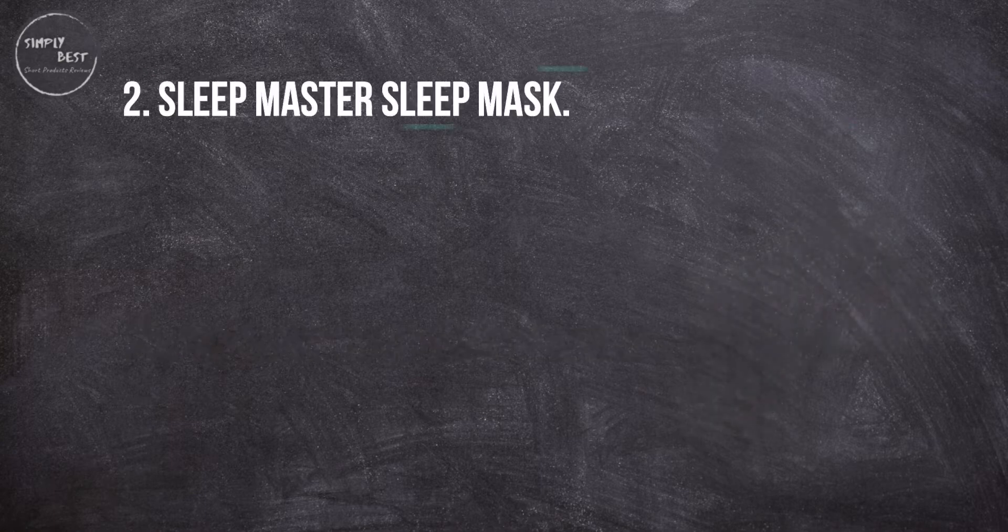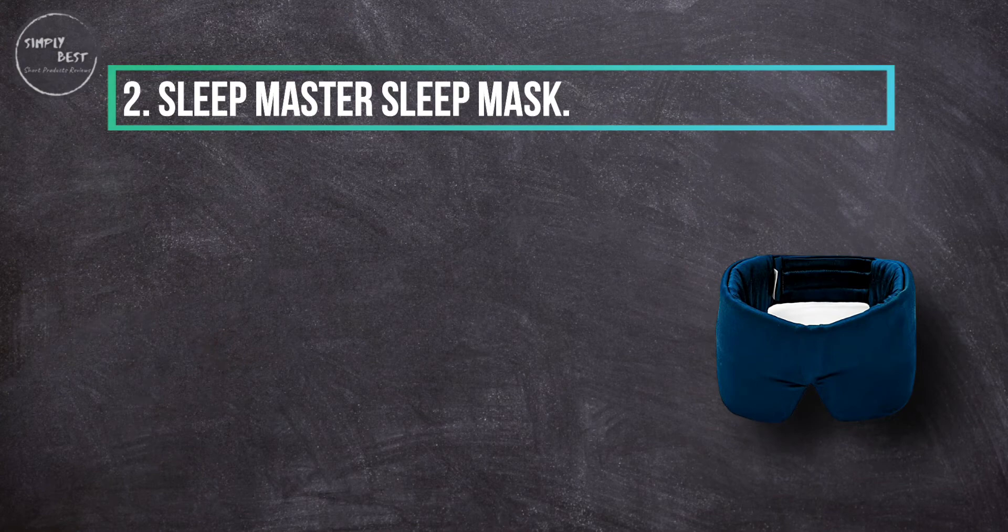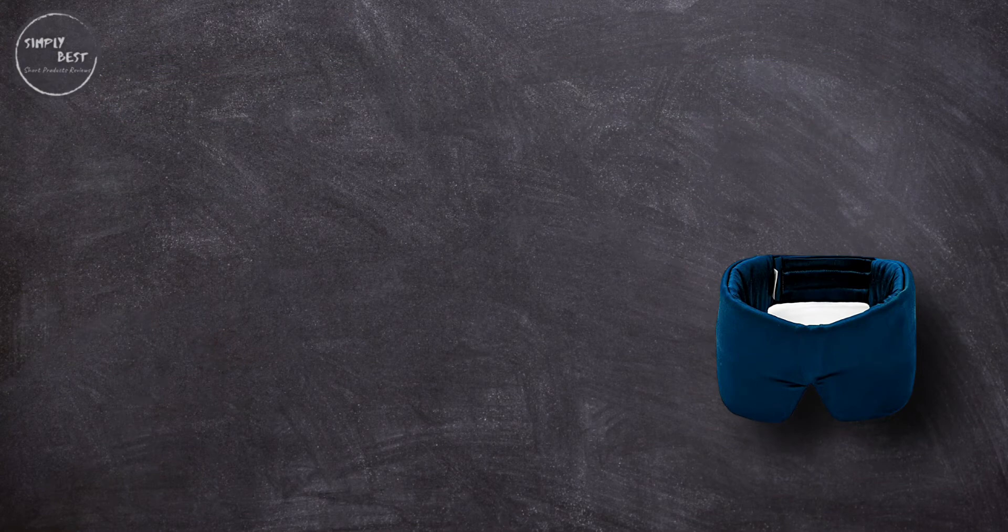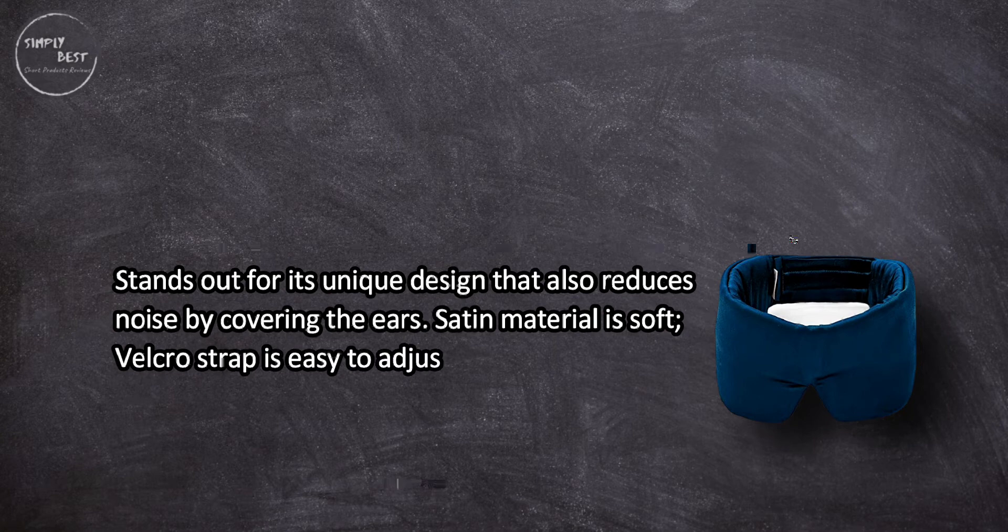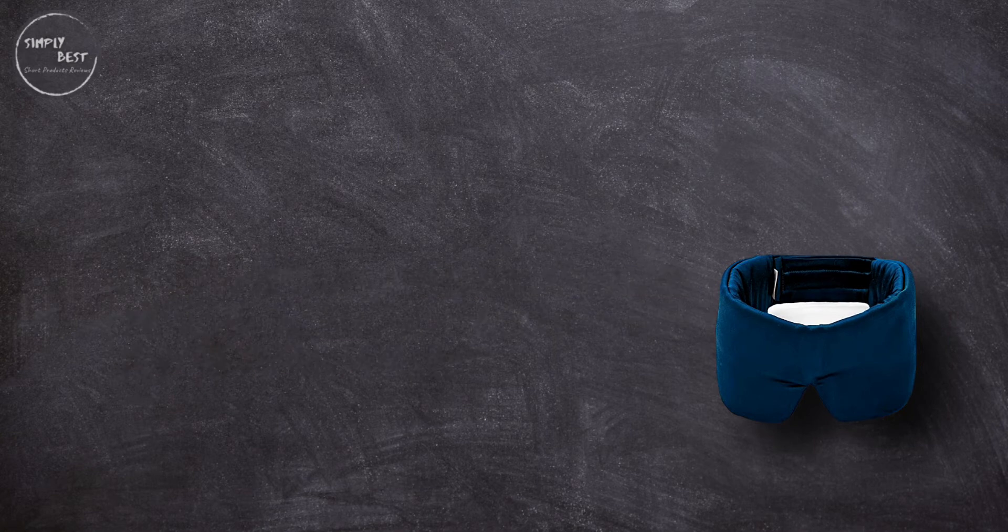At number two: Sleep Master Sleep Mask. Stands out for its unique design that also reduces noise by covering the ears. Satin material is soft and velcro strap is easy to adjust. A unique sleep mask that also functions as a noise reducer, but one that also comes with a few comfort and quality concerns.